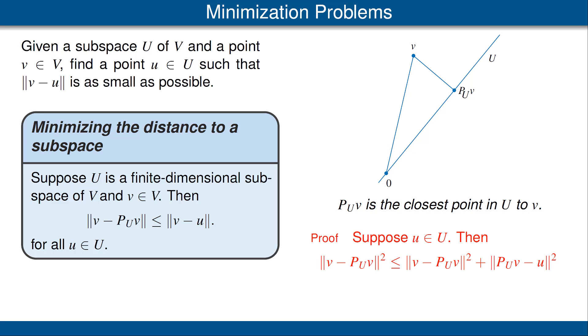Let's look at the proof of this result. Suppose u is a point in U. We'll look at the norm of v minus the orthogonal projection of U applied to v. As usual, it's easy to work with the norm squared, so that's what we'll do. And we have the inequality shown here.